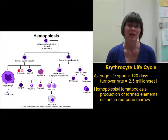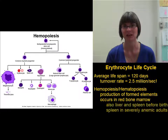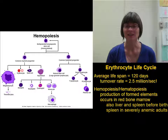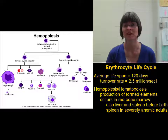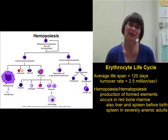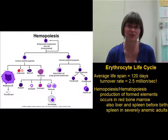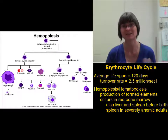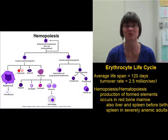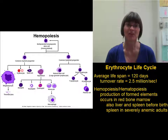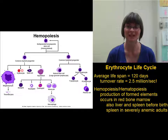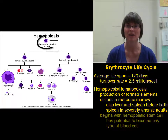Before birth, there are actually more areas in the body that will make blood. In a fetus, the liver produces blood cells, and so does the spleen. And in some rare cases in adults, in cases of severe anemia, the spleen can still help produce some additional red blood cells if necessary.